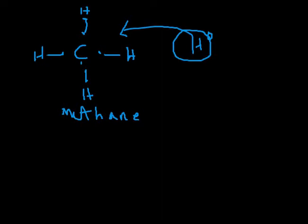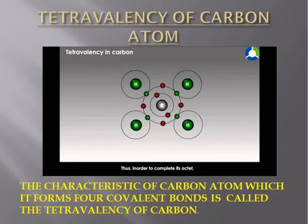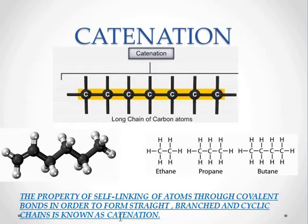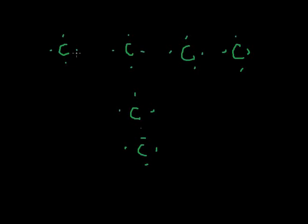Another property of carbon is known as catenation. You can see carbon atoms forming a long chain — the black colors are carbon and white is hydrogen. This is the atomic structure model you can find in stationery as well. Catenation is the property of self-linking of atoms through covalent bonds in order to form straight, branched, and cyclic chains. Carbon has a unique property to link together — also known as self-linking. This property is due to electron affinity, which you have studied in Chapter 1 on the periodic table.